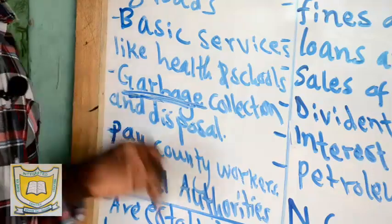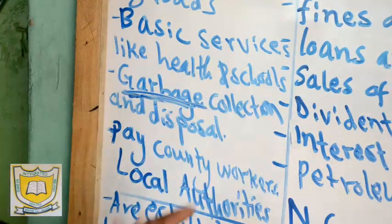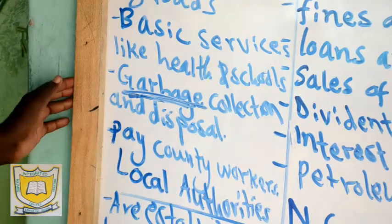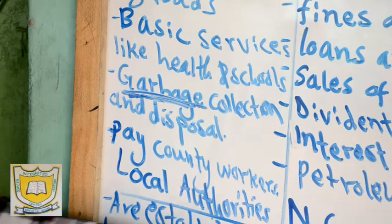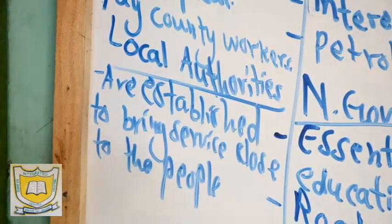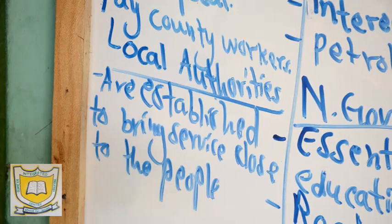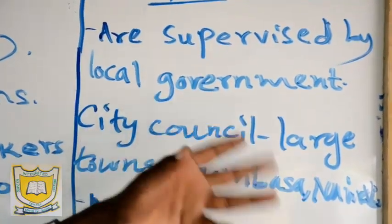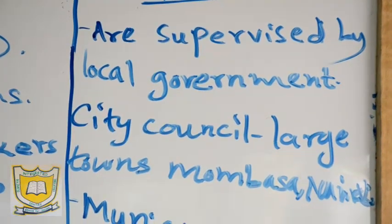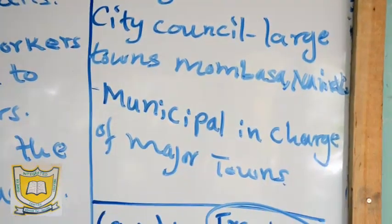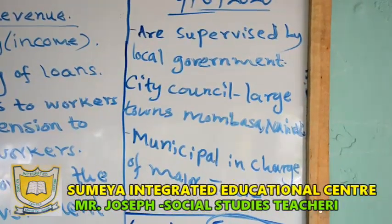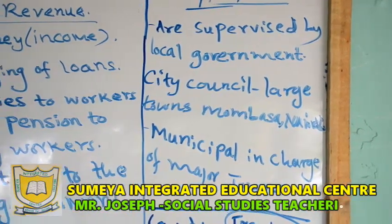Then paying county workers: the governor, deputy governor, county executive committee members, and people working in offices. The money is used to pay all county workers. Lastly, we have local authorities, established to bring services close to the people. They are supervised by the local government. For example, the city council is in charge of large towns like Mombasa and Nairobi, and the municipal council is in charge of major towns. They help at the lower levels of the county government and assist in collecting garbage and so on.